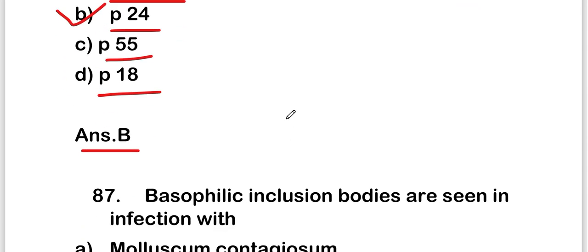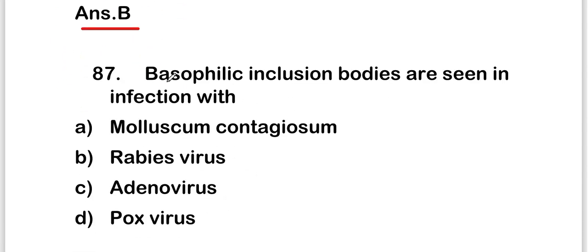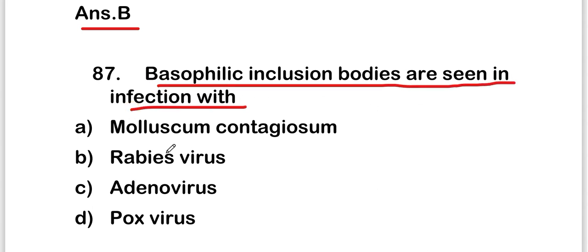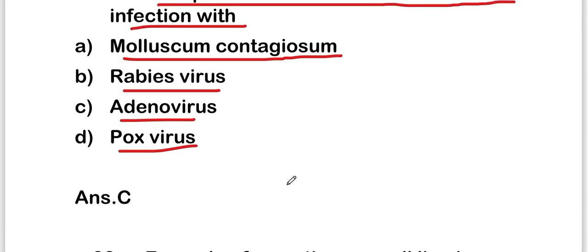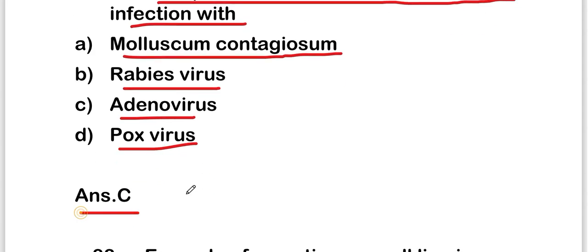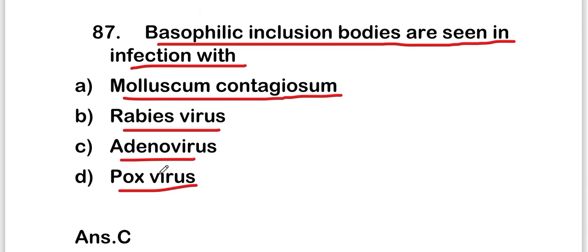The next question is: basophilic inclusion bodies are seen in infection with molluscum contagiosum, rabies virus, adenovirus, or poxvirus? The right answer is option C — adenovirus. Basophilic inclusion bodies are seen in infection with adenovirus.